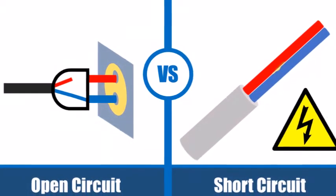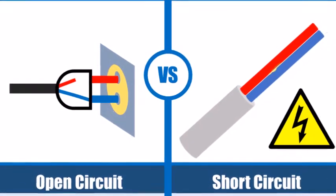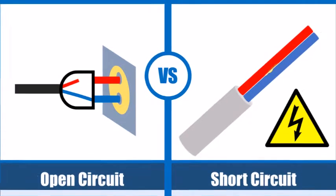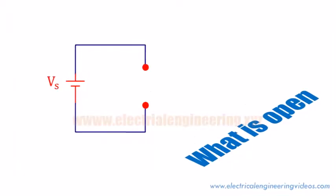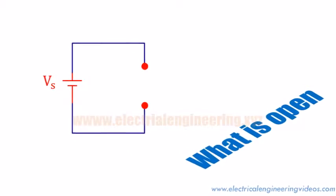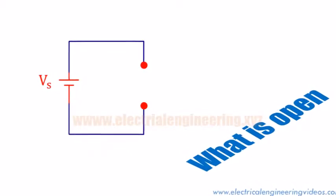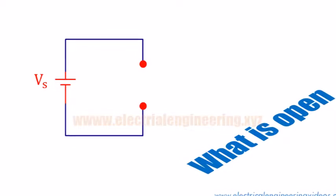Open and short circuits are two faulty configurations that might occur in electrical circuits. In this video you'll learn the difference between both. An open circuit occurs when a conductor is broken between two points.